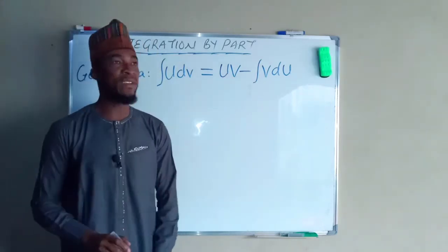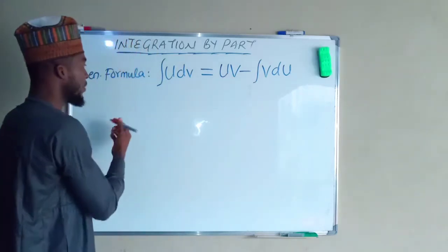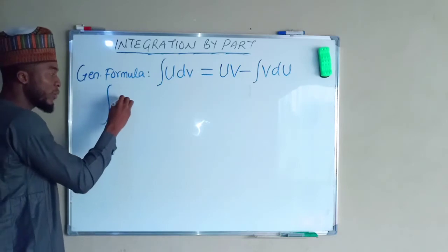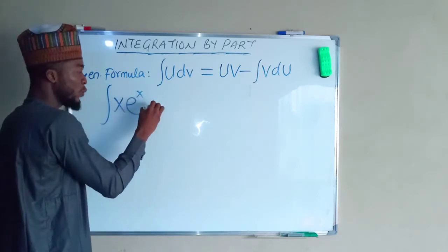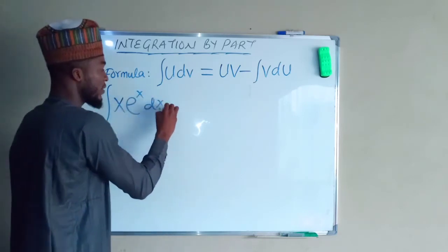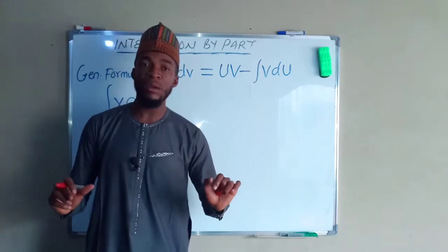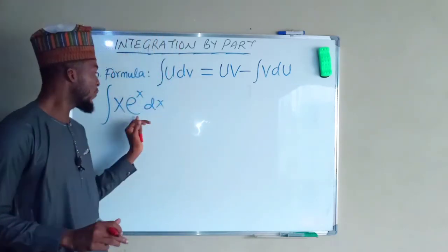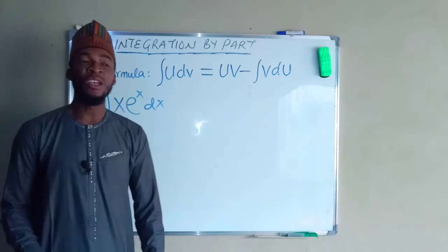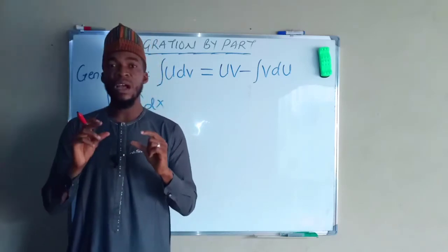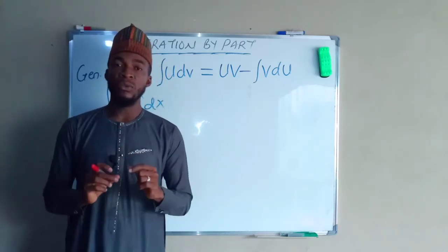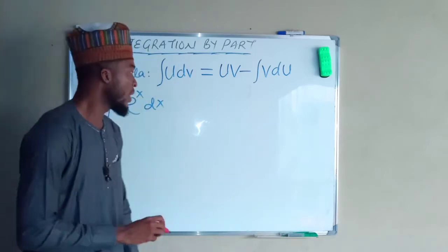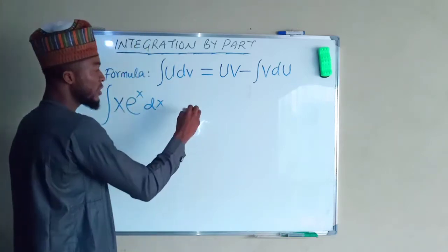Now let us take our first example. We are asked to evaluate the integral of x·eˣ with respect to x. The question remains: which function to set as u and which function to set as dv? There is an acronym that will help us determine which function to set as u, and the acronym is LIATE.